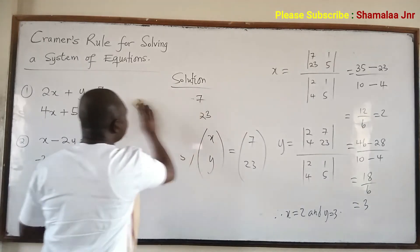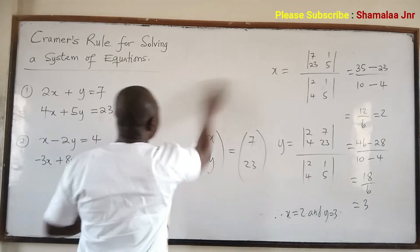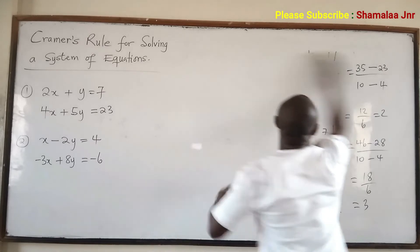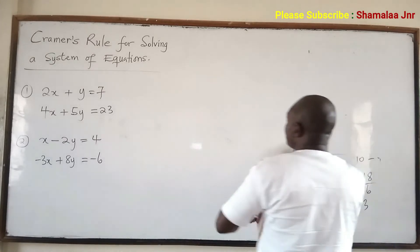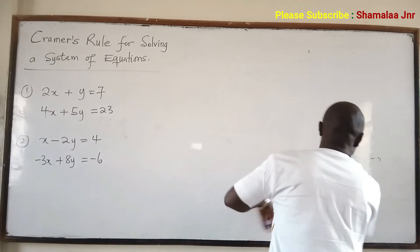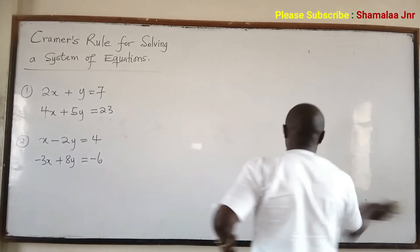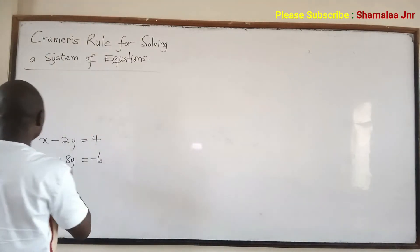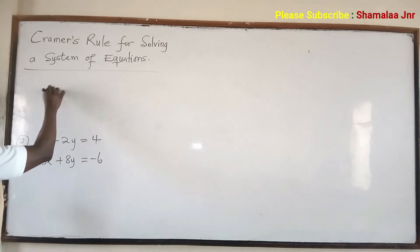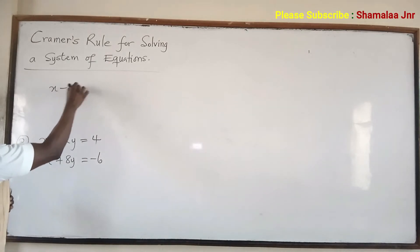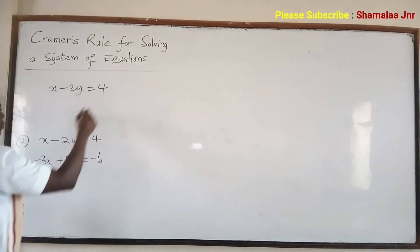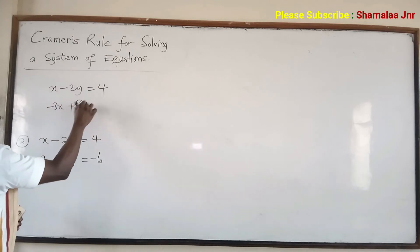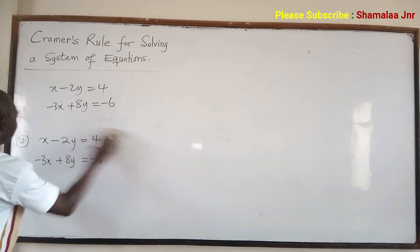Now let's look at the last question and say goodbye to how to use Cramer's rule to solve a system of equations. We have x minus 2y is equal to 4, and negative 3x plus 8y is equal to negative 6.